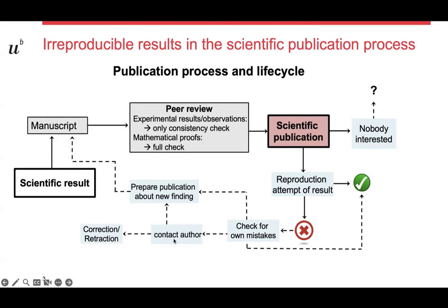If not, one option might be to contact the author of the paper, and then maybe you find a mistake. The author finds a mistake and can publish a correction or retract the paper. Or you can prepare a new publication about a new finding — you can publish the fact that there is an issue with reproducibility. In these two cases, the information that the original result is not reproducible is then found in scientific literature. However, these two routes are unfortunately very rarely taken.